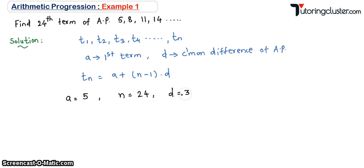Now put all these values. Tn, that means T24, the 24th term is equal to a which is 5, plus n minus 1, where n is 24, minus 1, into d which is 3. This is equal to 5 plus 23 into 3.